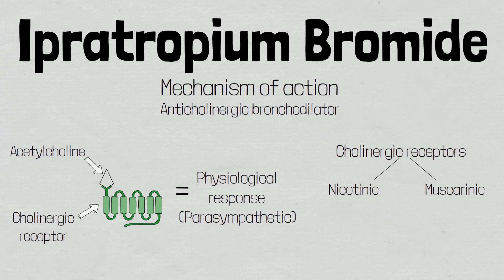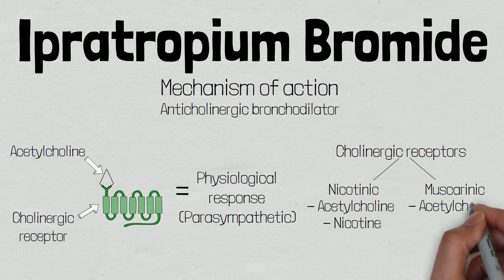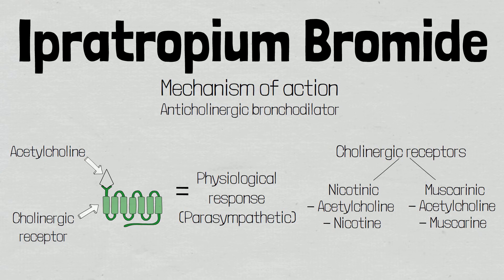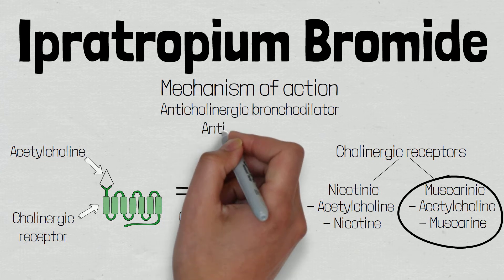Nicotinic receptors respond to acetylcholine and nicotine. Muscarinic receptors respond to acetylcholine and muscarine. Ipratropium bromide targets muscarinic receptors located on the bronchial smooth muscle, so it is also known as an anti-muscarinic.